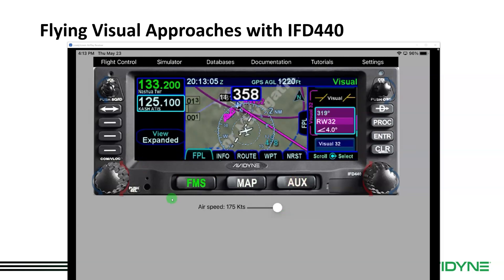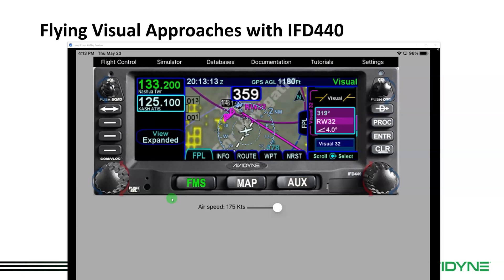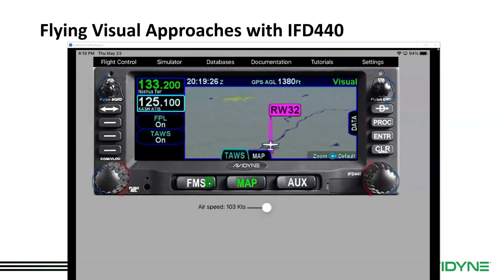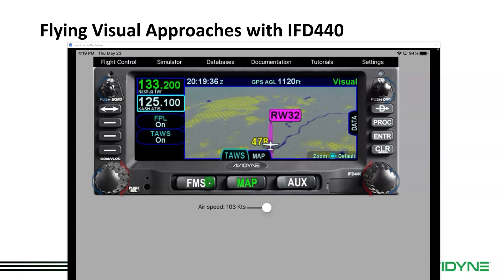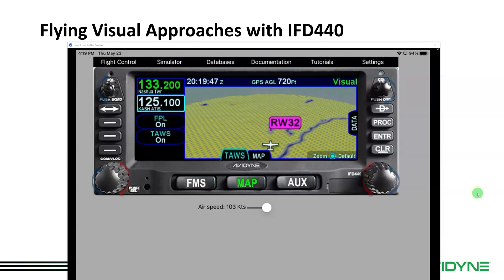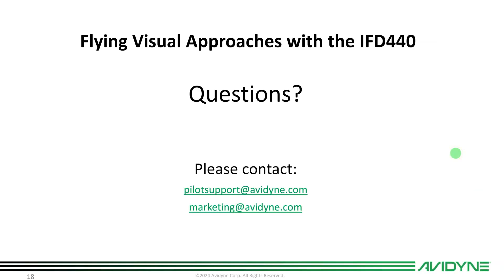Then you just hand fly it in — we don't have a CDI on the simulator here, but you would see your lateral and vertical deviation. You can see we're on the final approach to the runway, and the 3D synthetic vision gives you a great picture. You can also watch your CDI of course. That's it for visual approaches — thanks for watching. If you have any questions, contact pilotsupport@avidyne.com or reach me at marketing@avidyne.com. Thanks everybody and have a great day.